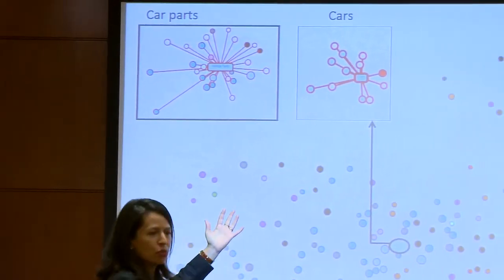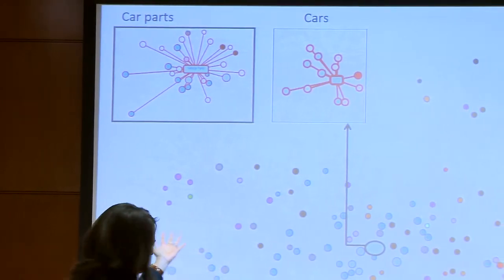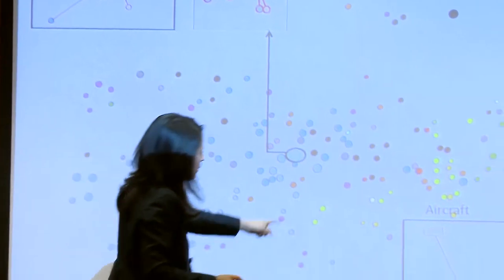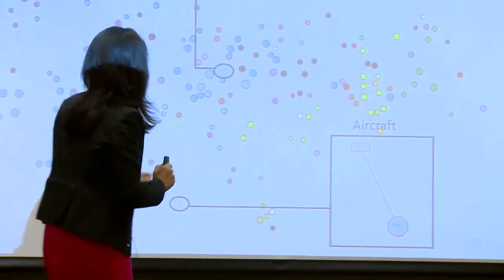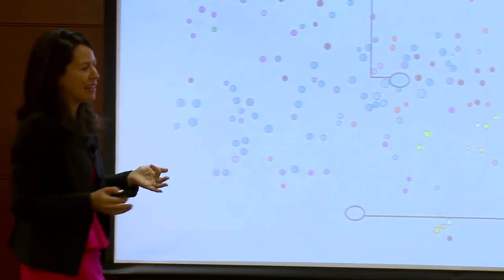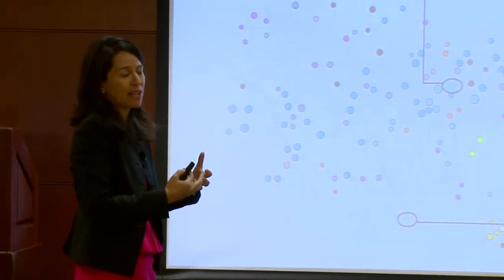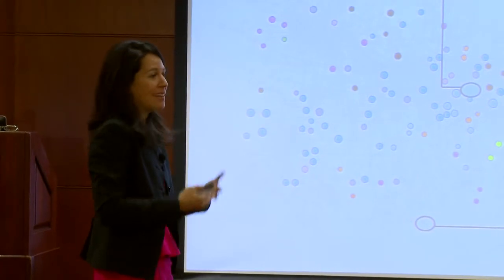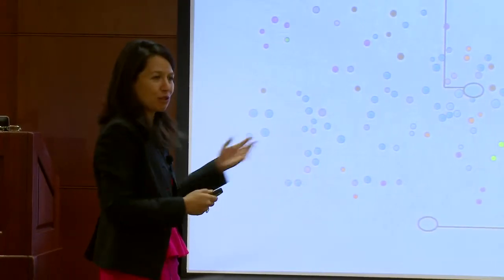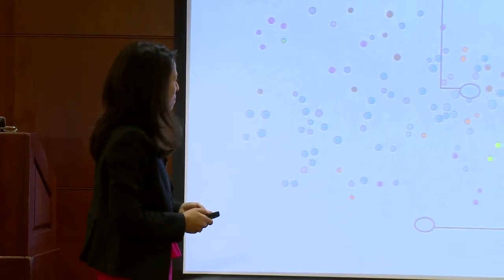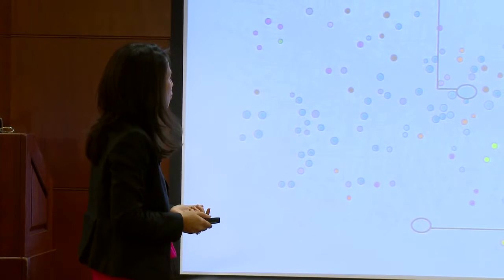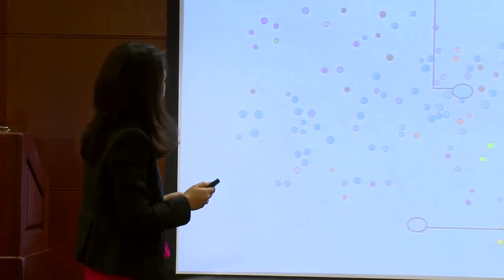Let's look at airplanes — a very sophisticated product. It's in the periphery and actually has one neighbor: explosives. The point is not that airplanes aren't sophisticated, but that the knowledge required to make them is very particular and not easily redeployed for other things. It's not bad that Brazil chose to invest in airplanes, but it's very hard to use those skills for diversification.